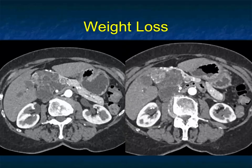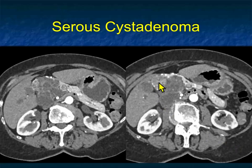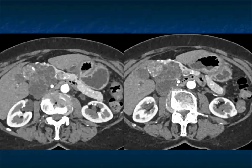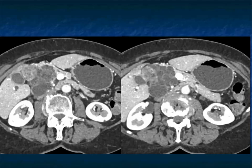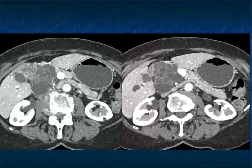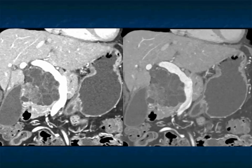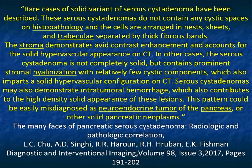Another similar example — patient with weight loss, multiple septations, and what looks like perhaps a solid component. If this was an MCN, you would say the solid component is malignancy, but we said 99.9% of serous cystadenomas never have malignancy. What you can see within a serous cystadenoma is both vascular and cystic components. The areas of enhancement decrease as you go to venous phase imaging. The scalloping of the portal vein and SMV is nicely seen. Typical malignancies invade, compress, and narrow — but scalloping is something I only associate with serous cystadenomas.